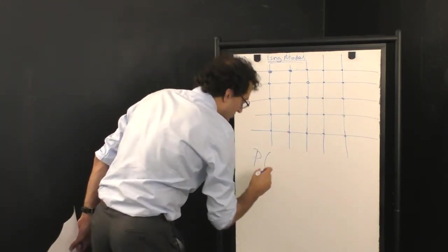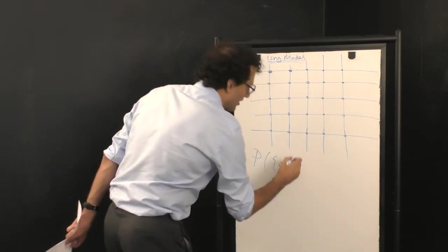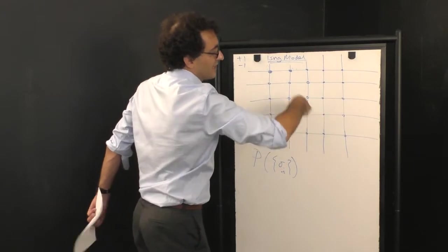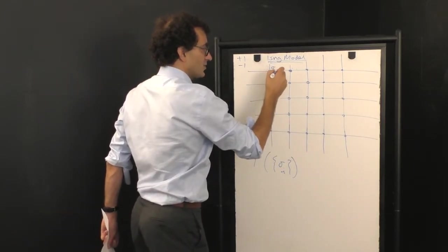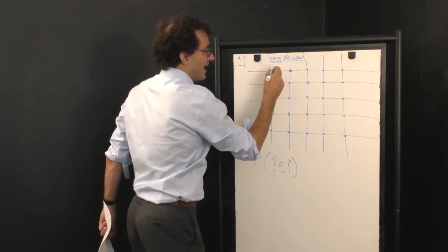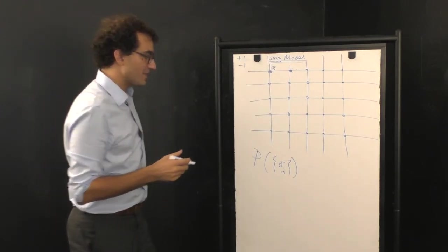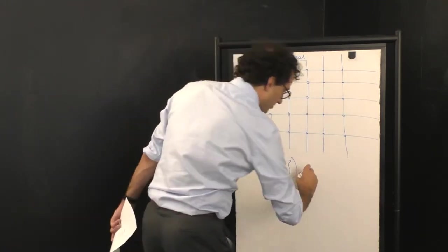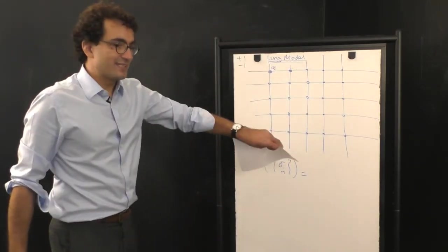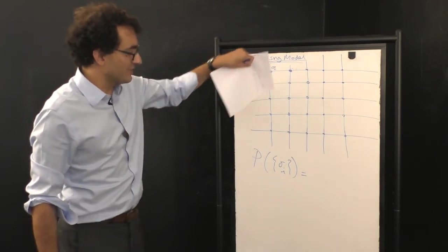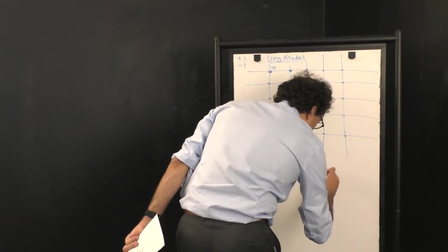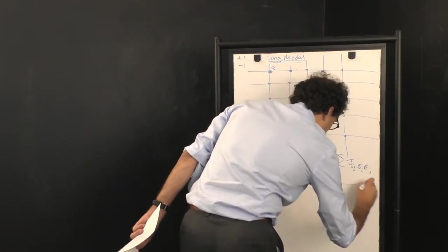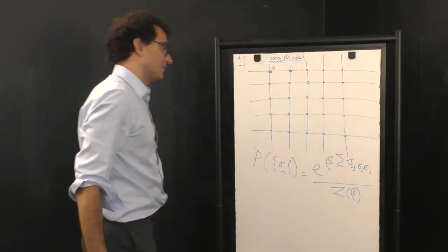Here is how we write the Ising model. We talk about a probability distribution over all of the states of the atoms in this lattice. And in general, think about a lattice extending forever. But for now, if you like, just think about a small patch. Each point here is described by a single number, which we'll call sigma and the label of that atom's position. So then the set of all of these variables here defines the entire state of the system. The probability of finding this lattice in a particular configuration, meaning in a particular pattern of plus ones and minus ones, is equal to the following quantity: e to the beta times the sum over the network of sigma i and sigma j divided by a normalization constant.